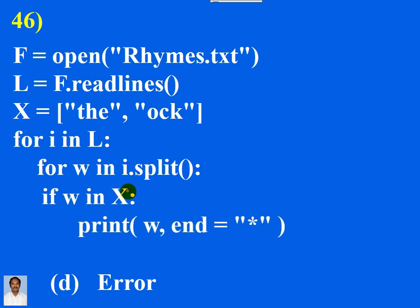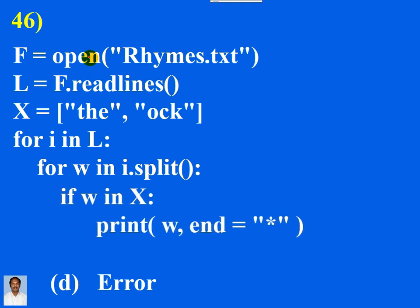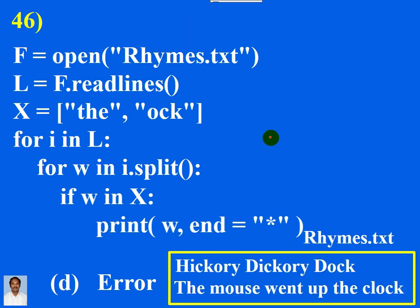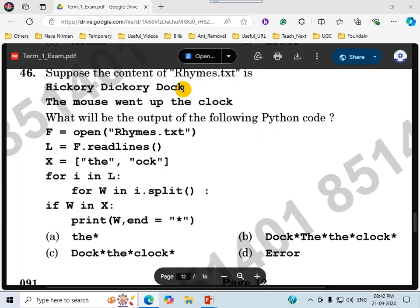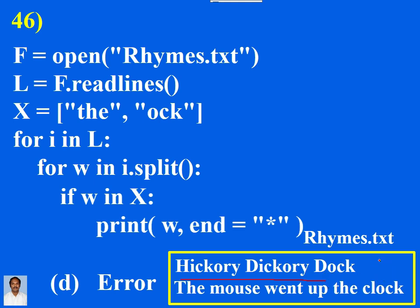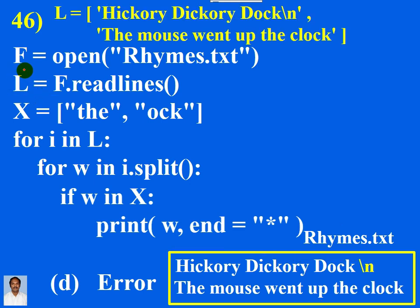I am going to correct the indentation. Now what's the output of the program? File rhymes.txt is opened for reading purpose. It contains two lines. The first one: 'hickory dickory dog' — and here the invisible new line character is also present. The second line is 'the mouse went up the clock.' Now f.readlines reads all the lines from the file. So l is a list of lines, and l[0] is the first line. Remember, readlines will read the new line character also.